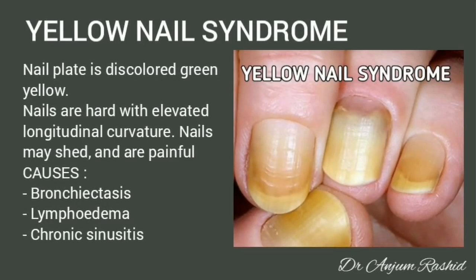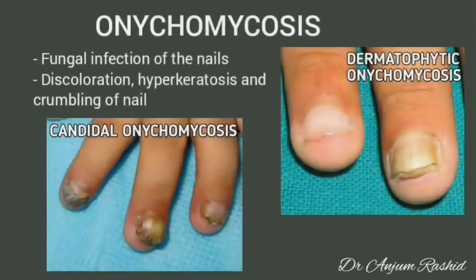Yellow nail syndrome: the nail plate is discolored green-yellow. Nails are hard with elevated longitudinal curvature. Nails may shed and are painful. Causes include bronchiectasis, lymphedema, or chronic sinusitis.